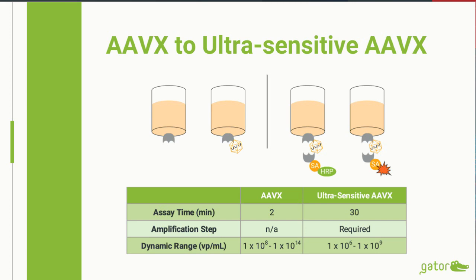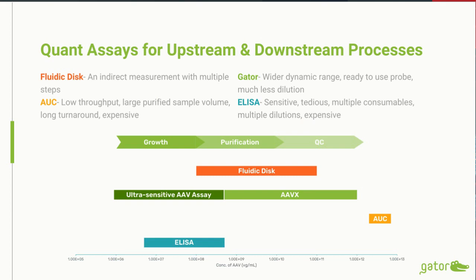We view both sensors as very complementary. Considering upstream and downstream processes — from the growth phase through purification and QC — the combination of the ultra-sensitive AAV assay and AAVX can cover the full application range. Comparing this to other commercially available assays such as ELISA and a fluidic disc method using fluorescent detection, those methods have a much narrower analytical range and consequently a more limited range of application.